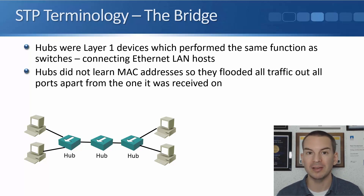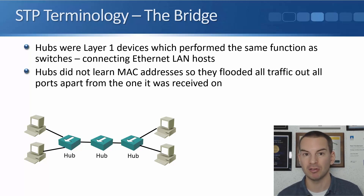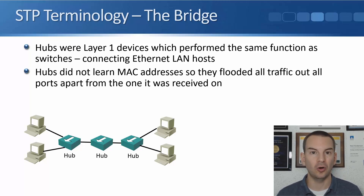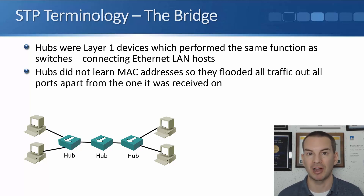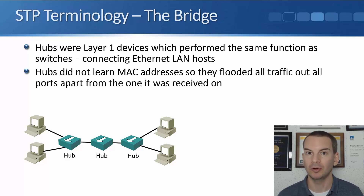Hubs are layer one only, so they did not learn MAC addresses like switches do. They flooded all traffic out all ports apart from the one it was received on — not just broadcast traffic, but all unicast and multicast traffic as well, flooded everywhere.